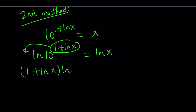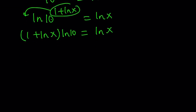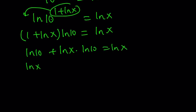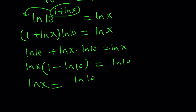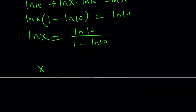So now we can write this as 1 plus ln x times ln 10 equals ln x. Notice that ln x can be distributed, so we get ln 10 plus ln x times ln 10 equals ln x. We can put the terms that contain ln x on the same side and factor out. And from here we arrive at the same result — it's just a little different path, but we end up with the same thing.